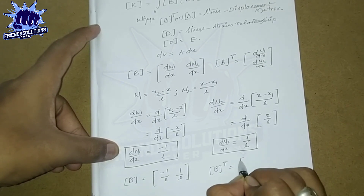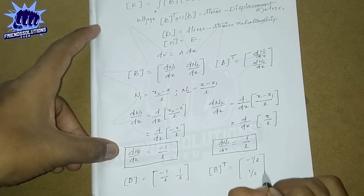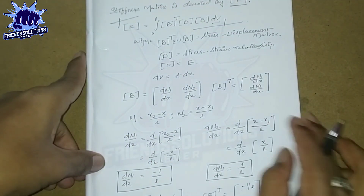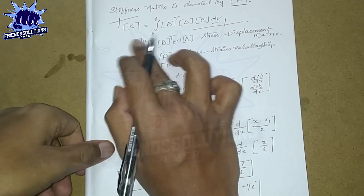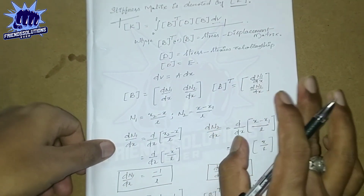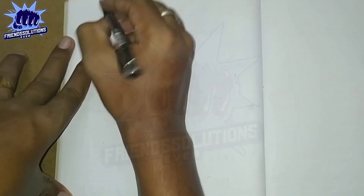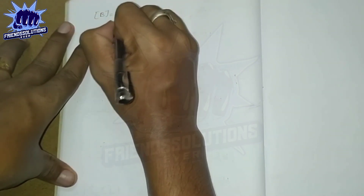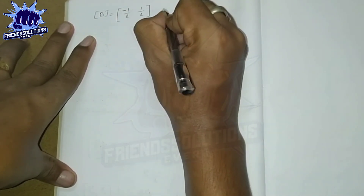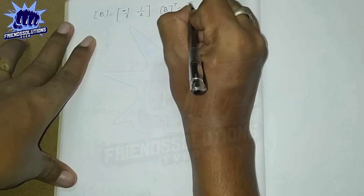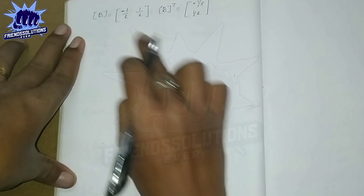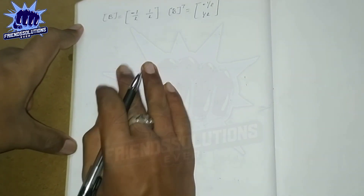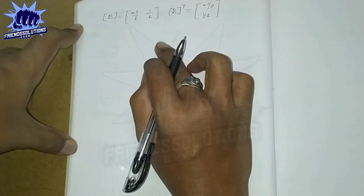After deriving B, B-transpose looks like the column vector: [-1/L, 1/L]. Remember: in a transpose matrix the columns are converted into rows and rows into columns. So B is the row matrix [−1/L, 1/L] and B-transpose is the column matrix [−1/L; 1/L]. By knowing this we can now substitute into the stiffness matrix equation.